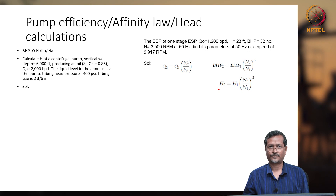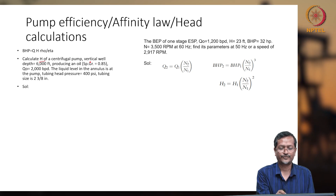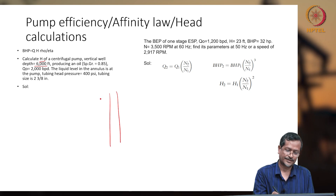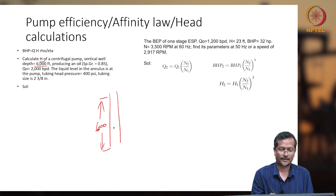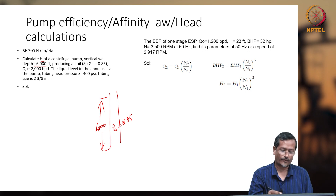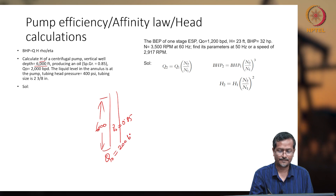Now let us have a small calculation problem. Calculate the head of a centrifugal pump with a vertical well depth of 6000 feet. It is producing oil with a specific gravity of 0.85, and flow rate of oil Q is 2000 BPD (barrels per day).